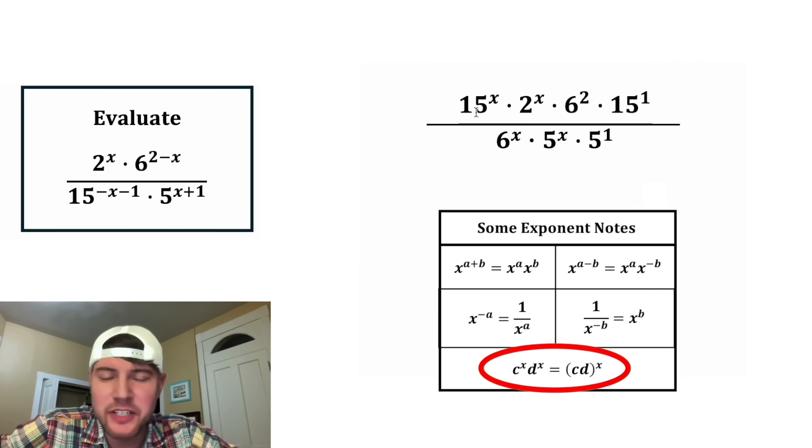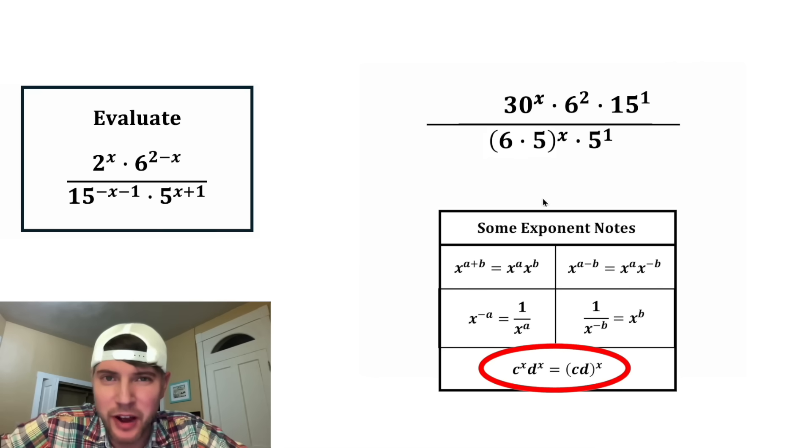So in this case, we have 15 to the x times 2 to the x. We can rewrite that as 15 times 2 to the x, which equals 30 to the x. And same thing down here. We have 6 to the x times 5 to the x. And we can rewrite that as 6 times 5 to the x, and 6 times 5 is equal to 30.